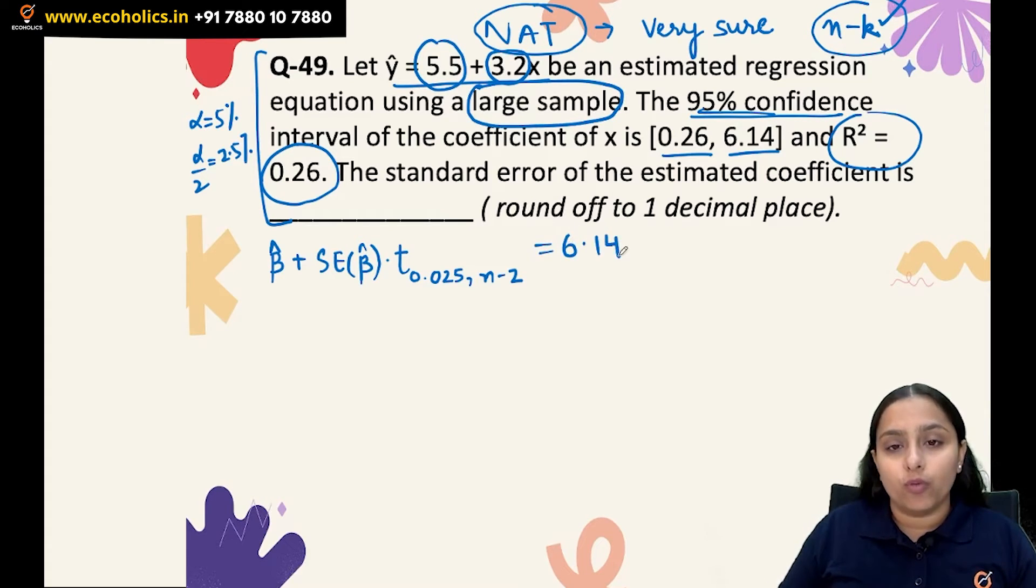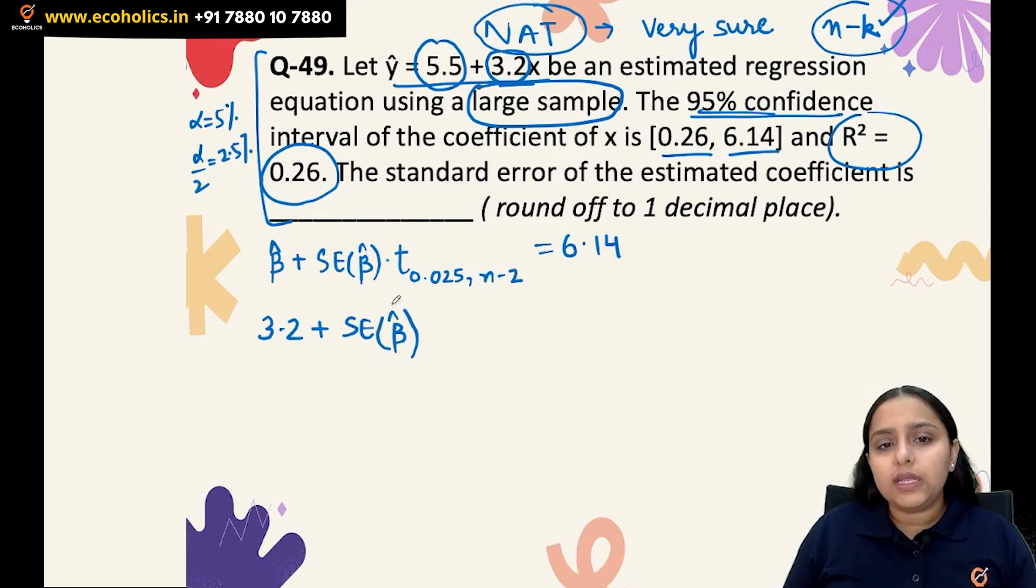So this is the upper limit and it has to be equal to 6.14. What is β̂? β̂ is the estimated value of slope coefficient which is 3.2 here. Standard error we have to find.